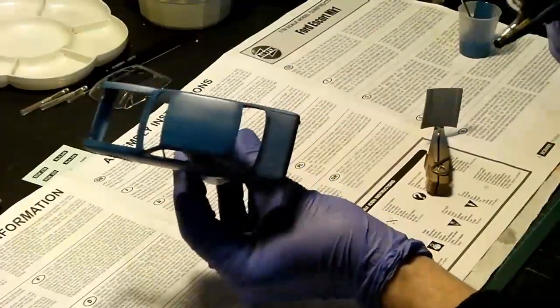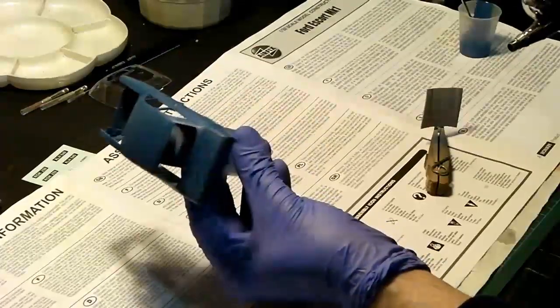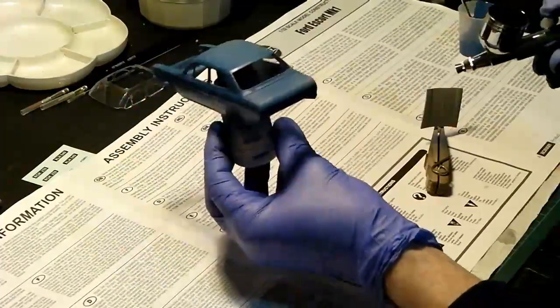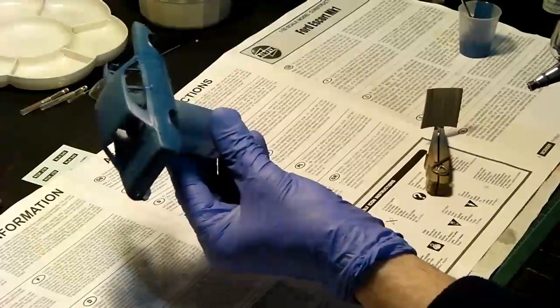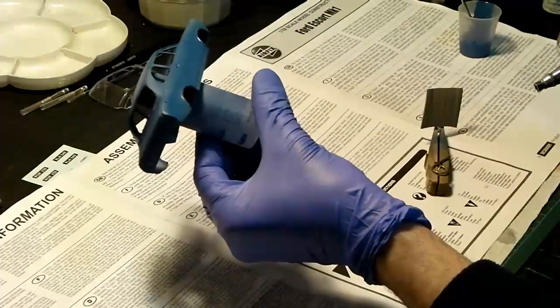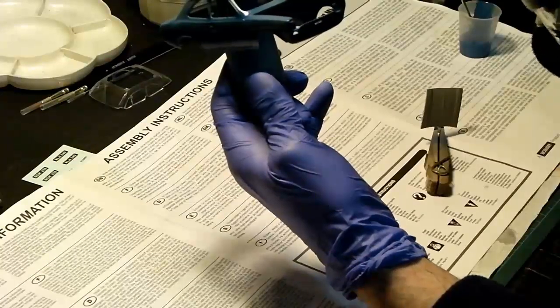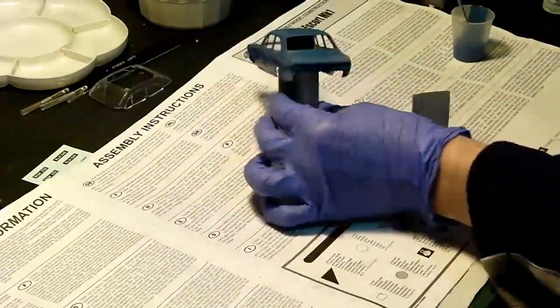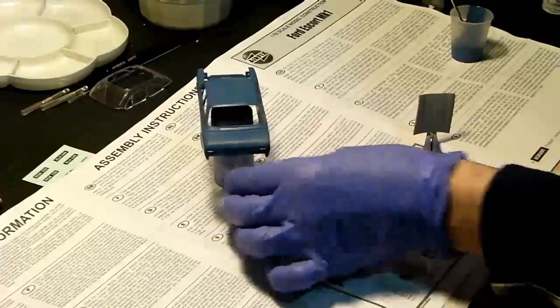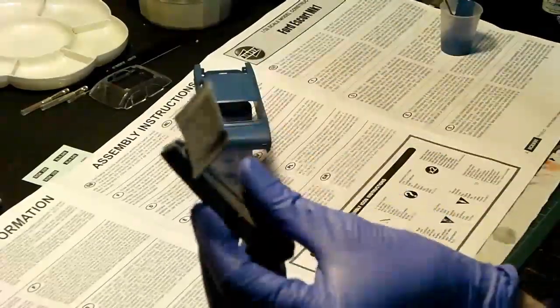There we've got, not particularly shiny as you can see, but there we've got the first mist coat of color down. This one doesn't need to be heavy. You're laying down the basics to lay the wet coats on. I'm going to leave that to flash off a moment while I focus on the bonnet.